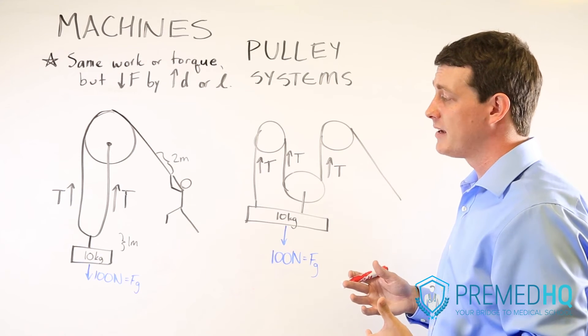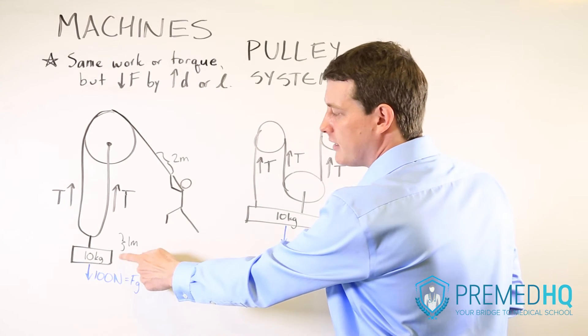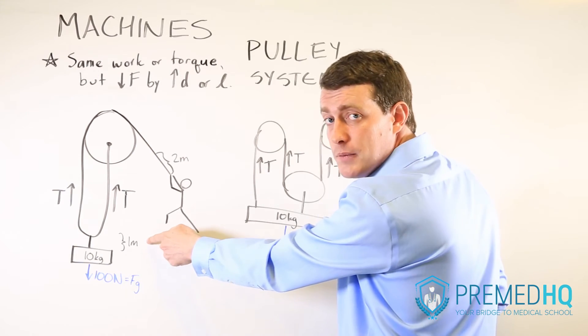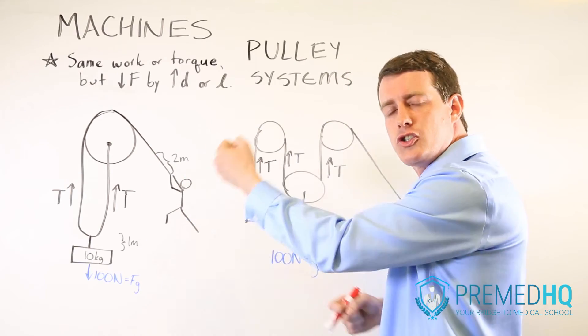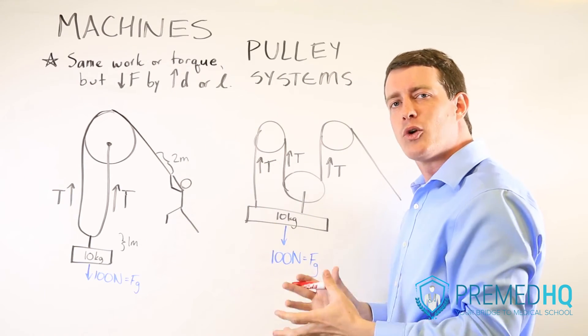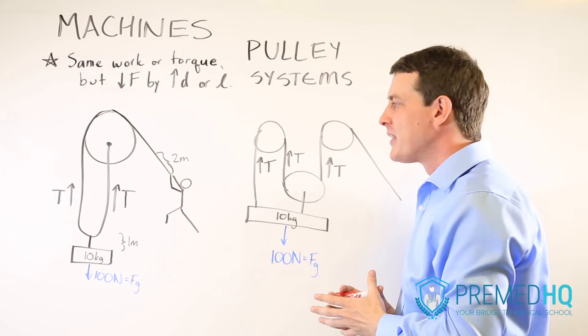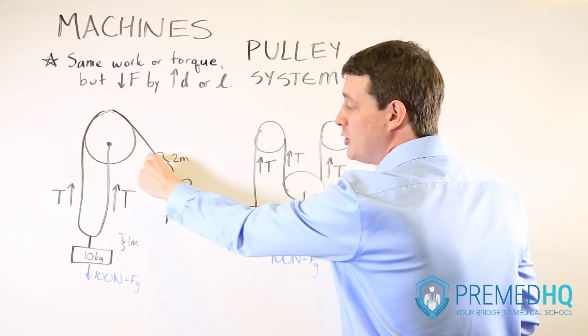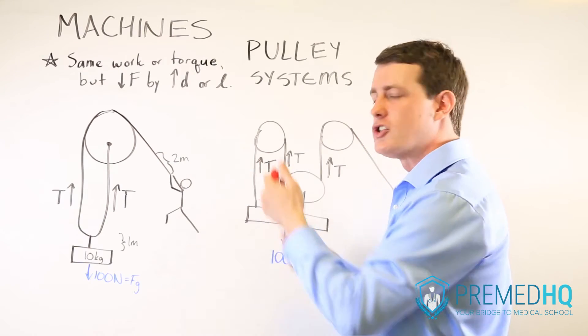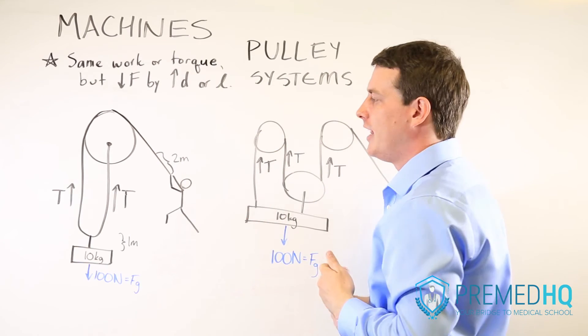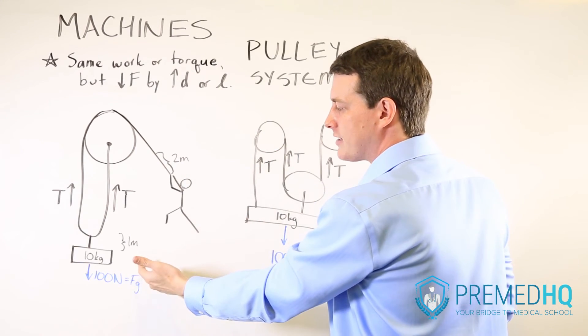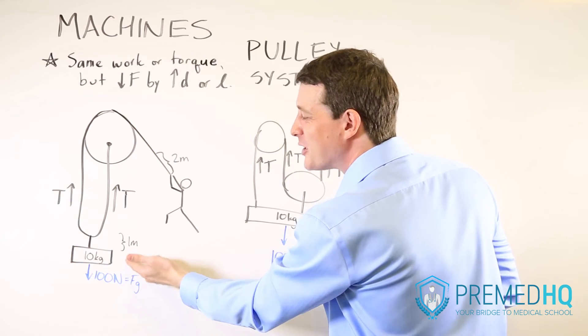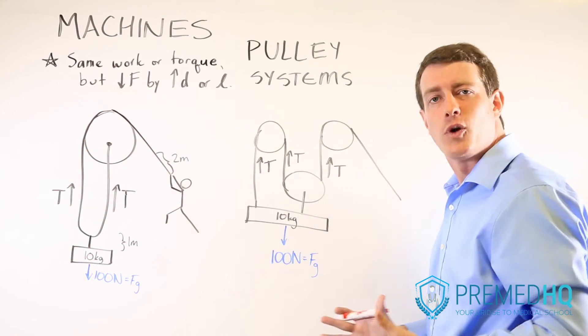Now where does the distance come in? Well, if you're going to be lifting this object one meter, you would have to pull two meters of rope in order to generate that tension force. And so this person will be using a smaller force, a 50 Newton force over a two meter distance, and that will allow them to perform the work necessary to lift a 100 Newton object over one meter.